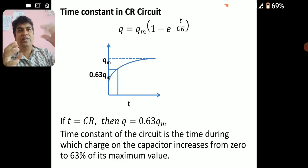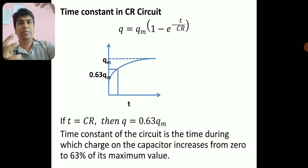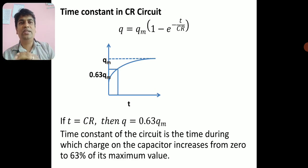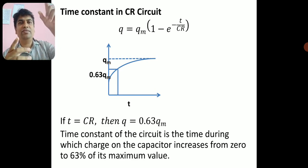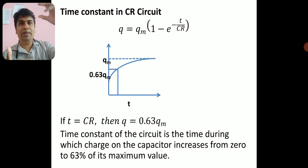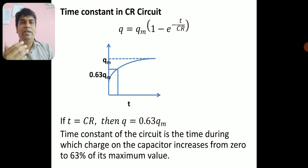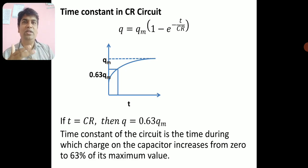I will take the final equation from the previous derivation: charge q equals qm × (1 − e^(−t/CR)), where qm is the maximum charge the capacitor can hold, equal to C × V, where V is the EMF of the battery. So we have the equation for charge on the capacitor: q = qm × (1 − e^(−t/CR)).